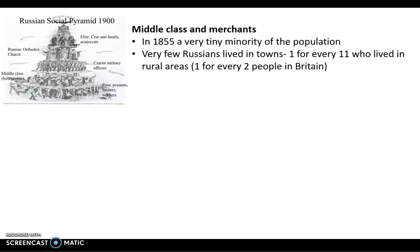There was a very small middle class, a merchant class in the towns and cities within Russia, which was really quite a tiny minority. Very few Russians actually lived in towns and cities — about one person lived in a town for every eleven who lived in the countryside. To compare that to Britain at the time, it was one in two, so every person in the town had two people in the countryside. You can see how much more urban Britain was in 1855 and how much more rural Russia was, with a very small middle class group.